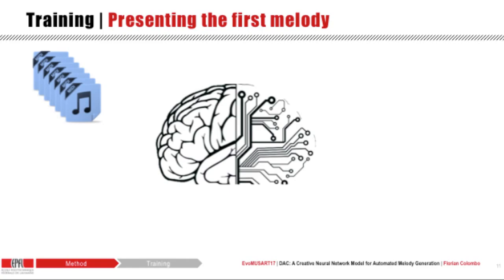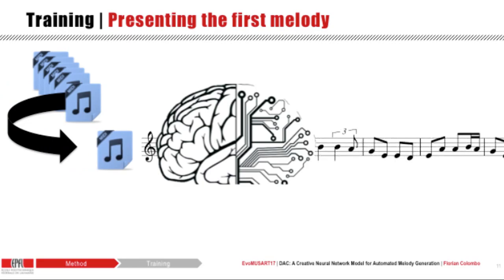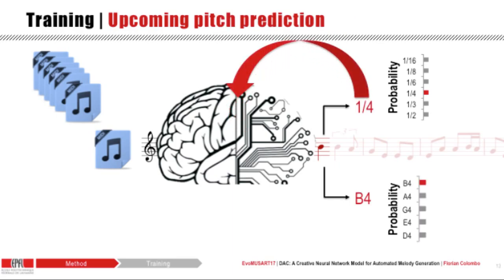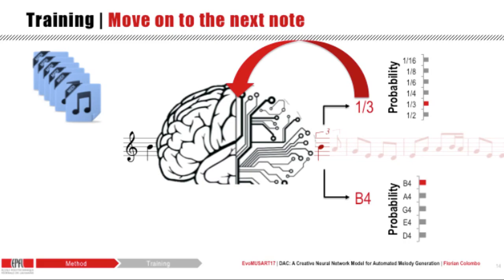Starting by presenting the first randomly selected melody from the training corpus to our model, the first thing our model does when seeing a melody is trying to guess the probability of the first note duration. Then the model is informed of this note duration and outputs the probability of the first note pitch. Then we move on to the next note and do the same. However, as the model parameters are still randomly initialized, the output distributions are flat or uniform.